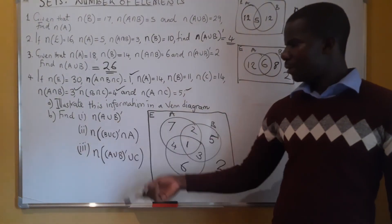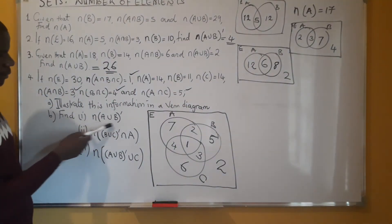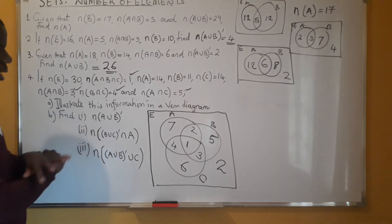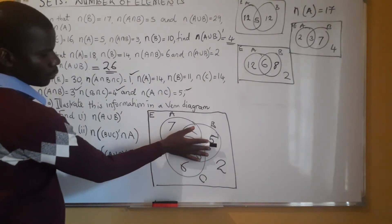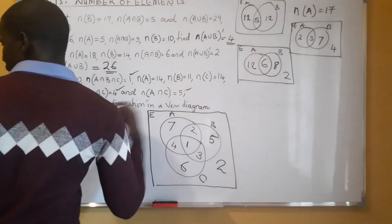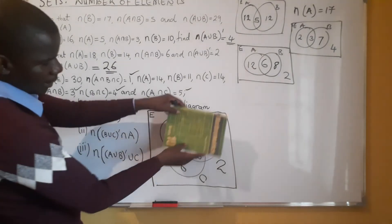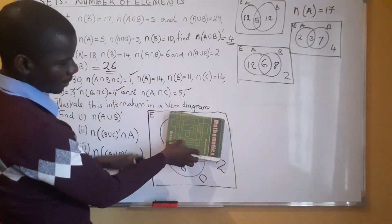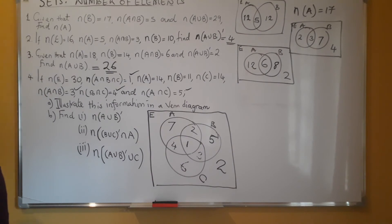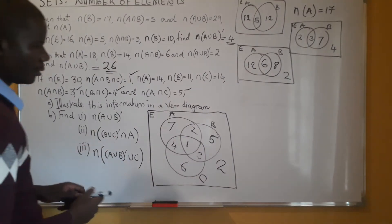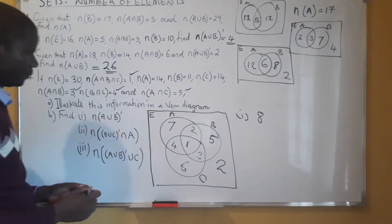Now we can answer these questions. The first sub-question is about elements that are not in set A and B — those elements outside A and B. A and B cover these regions, so we are left with what is outside: 6 and 2, which gives us 8.